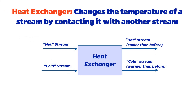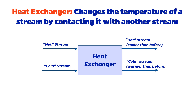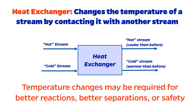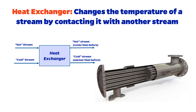Temperature, as we'll discuss in a later episode, is one of the key process variables. The temperature of a stream may need to be increased or decreased for any number of reasons, including better reaction yields, more efficient separations, or safety. A heat exchanger is the process unit that allows two streams to come into contact with one another but not mix. There is plenty of surface area available in a heat exchanger for the hot stream to transfer energy to the cold stream.